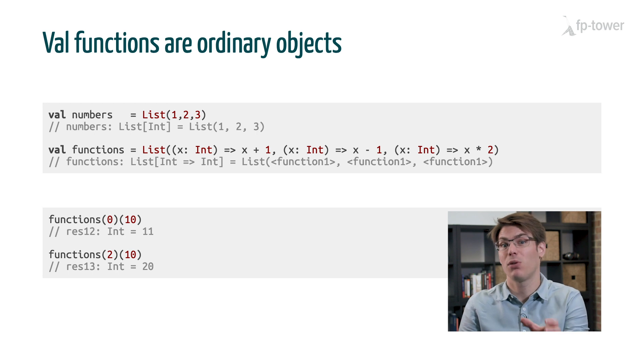If we say, for example, function 0, 10, then we look up the first item in the list, and we apply 10 to it, which gives us 11, because the first function increments the input by 1. But if we say functions 2, 10, then this time the result is 20, because the last function in the list multiplies the input by 2.